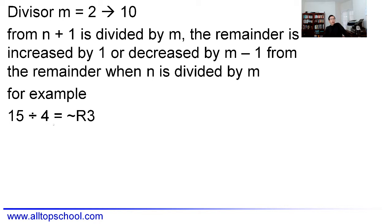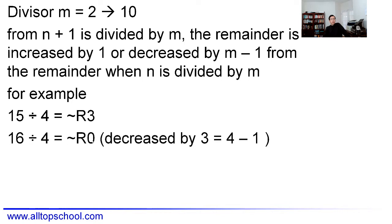With m equal to 4: if we increase 15 by 1 to get 16, then 16 divided by 4 has remainder 0. The remainder decreased by m−1, which is 3. This makes sense because the remainder had reached its maximum of 3, and adding one more makes it a multiple of 4, so the remainder drops to 0.